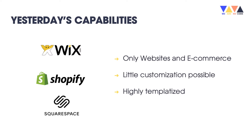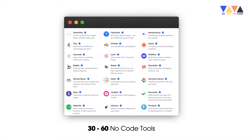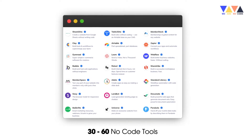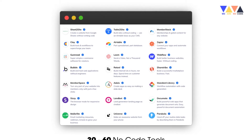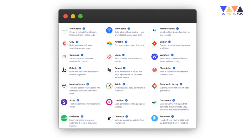When most people think about NoCode and building software, they think of platforms like Wix, Shopify, and Squarespace. These are great platforms but they only really allow you to build websites and e-commerce platforms — they're not very customizable and are highly templatized. We've really moved into a whole new generation of tools to build much more complex solutions. There are now over 30 to 60 well-funded NoCode tools, including Bubble, Webflow, Zapier, Airtable, MemberStack, and more, that allow us to build way more complex software solutions.